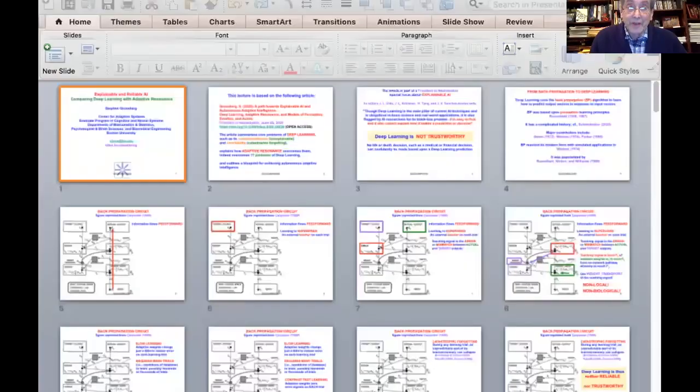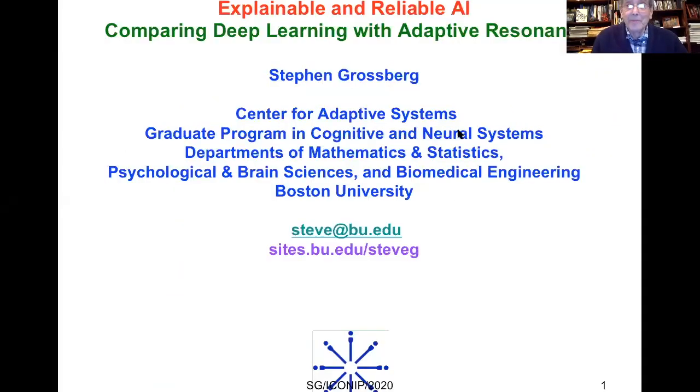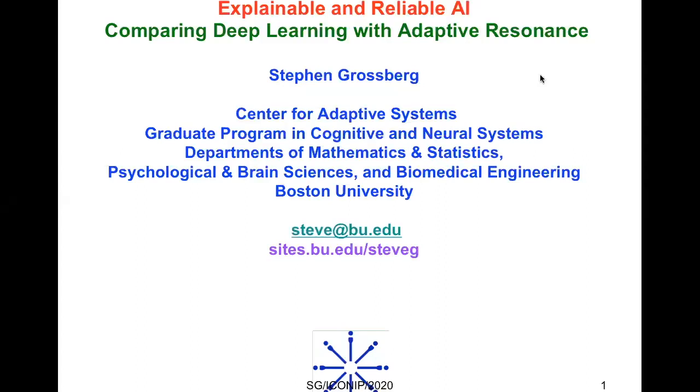I will start playing the video. Hello. I'm delighted to be able to speak to you today about a topic concerning artificial intelligence, which as you know is very much in the news these days. I'll be contrasting two very different approaches to artificial intelligence. My topic today is explainable and reliable AI, comparing deep learning with adaptive resonance.